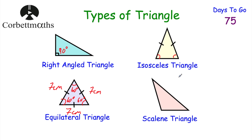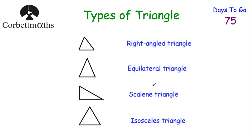And finally, a scalene triangle is a triangle where all three sides are different lengths to each other, and all three angles are different sizes as well.